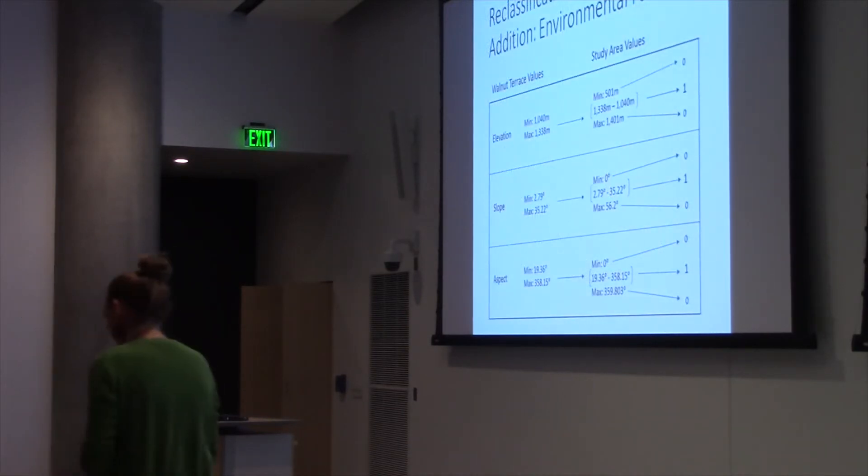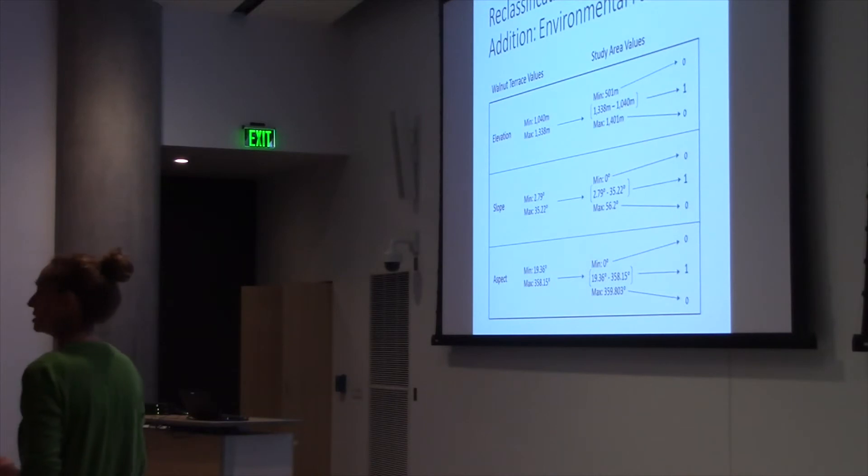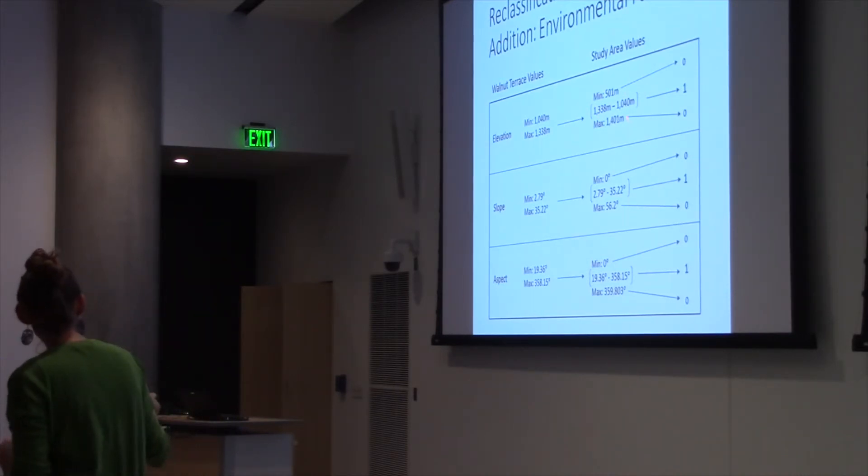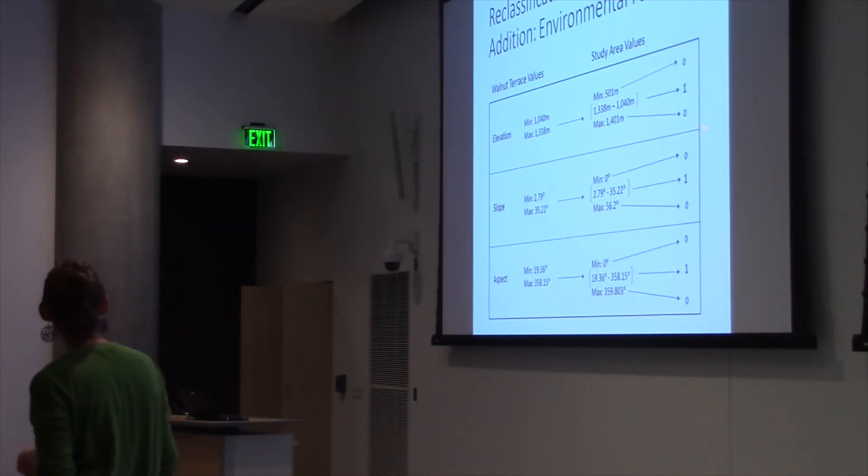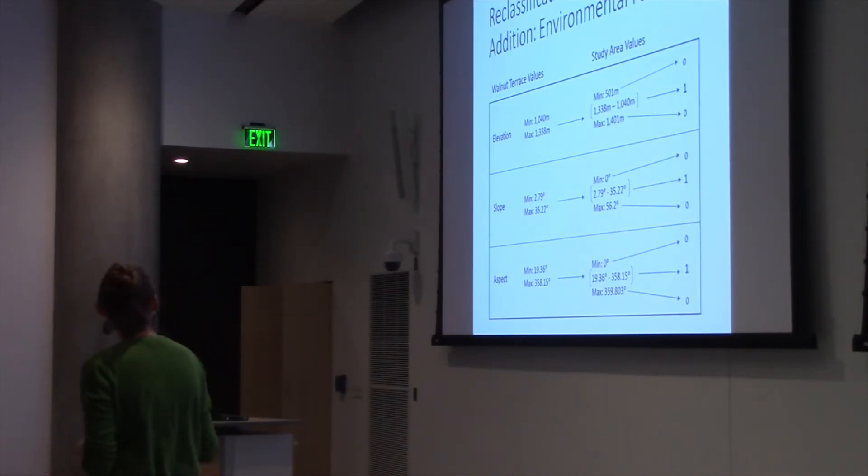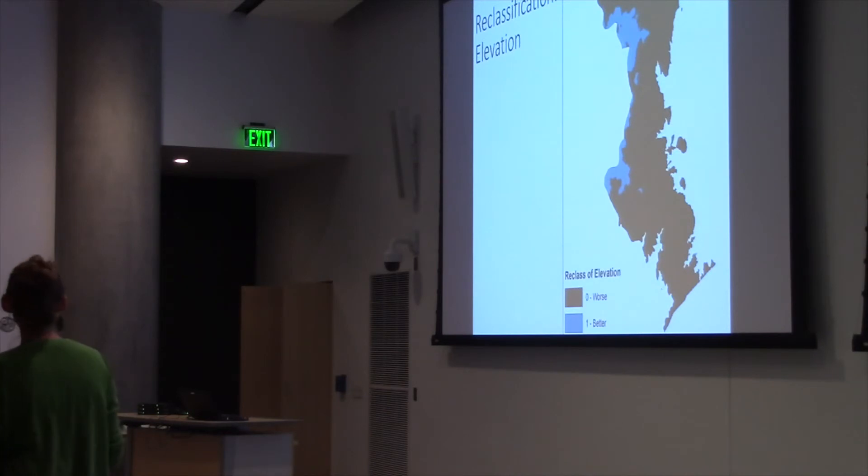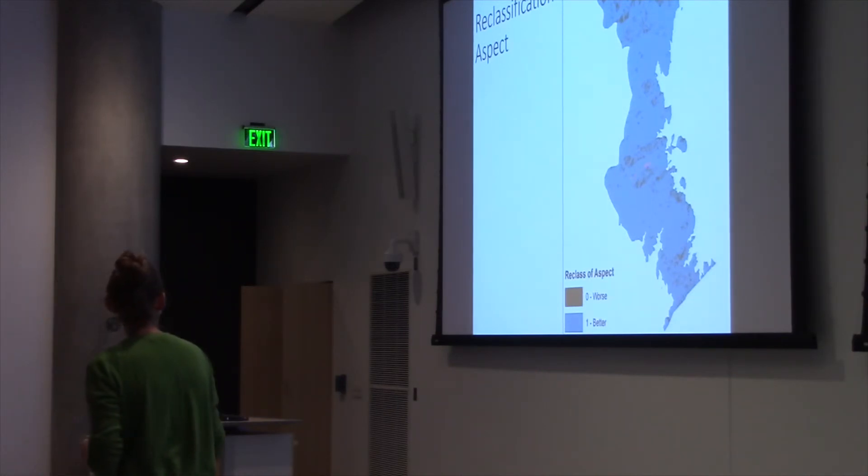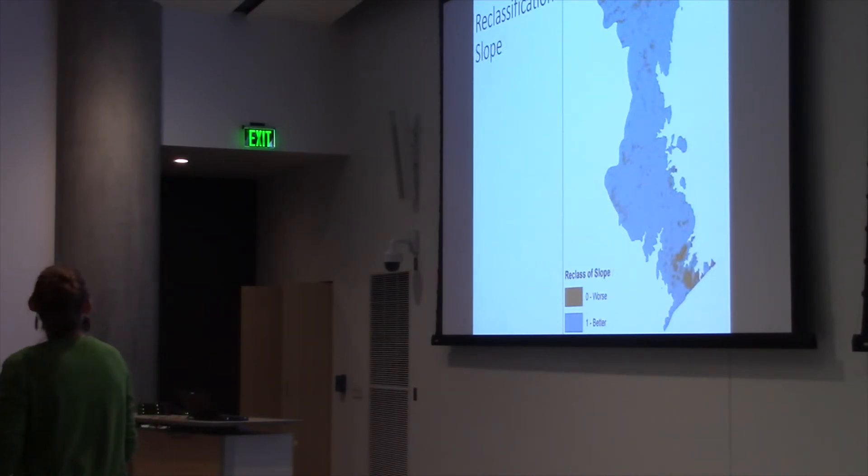Then, of course, I had to reclassify all of these. For the environmental factors, I took the numbers straight from the walnut terrace values. Since the highest elevation that walnuts grew at in the terraces that I looked at was 1338 meters, that immediately became the upper limit for my one reclassification. 1040 became the low, and anything outside of that was immediately reclassified as a zero. I did it again with slope and again with aspect. You can see what these look like. For elevation, walnuts were actually growing in a pretty narrow range of elevation. We get blue being better, brown being worse. Luckily for me, they grow at tons of different aspects. Apparently, they don't just like southerly slopes, they like everywhere. Only the most northerly slopes were reclassified as worse. The same thing was true of slope. Only the most shallow or the most flat and the most steep things were reclassified as zero.